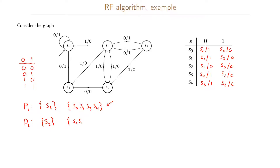For S3 and S4, with input 0 they stay in this group, but with input 1 they go to the group containing S2 — a different partition. So S3 and S4 form their own partition. Since P1 is not equal to P2, we are not done and must continue, so we form P3.